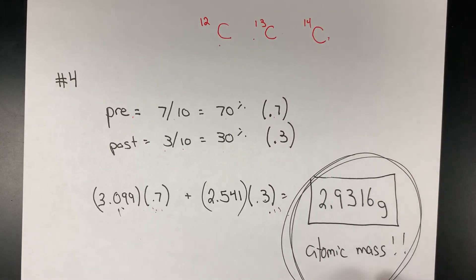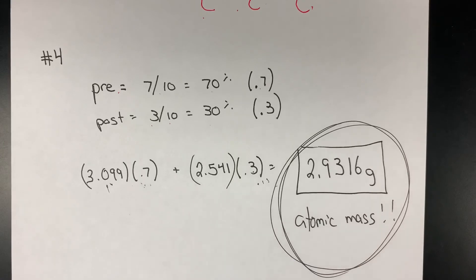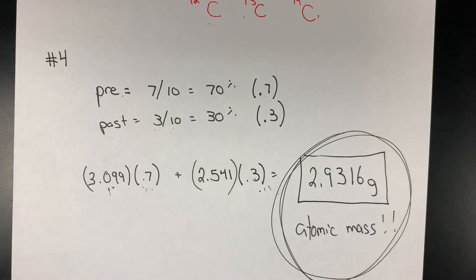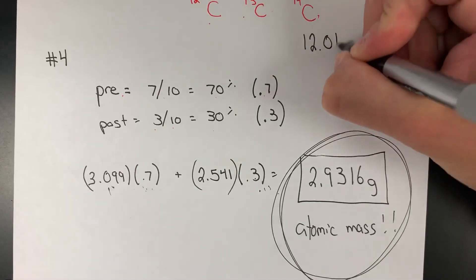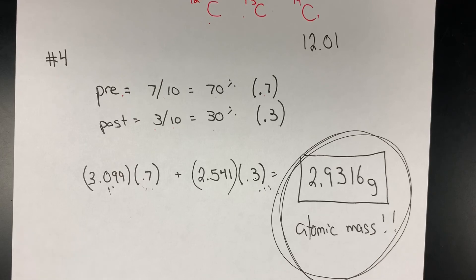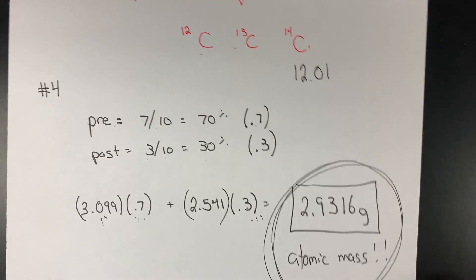This is your representative mass for pennies, not considering pre or post, just pennies—just like how 12.01 would be your representative mass, your atomic mass, for carbon. Awesome, thanks guys.